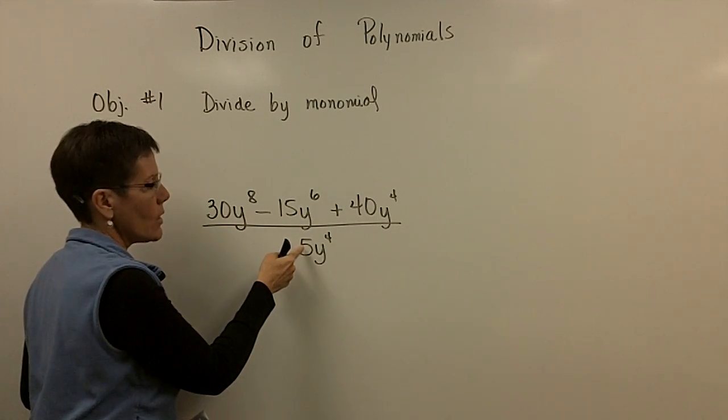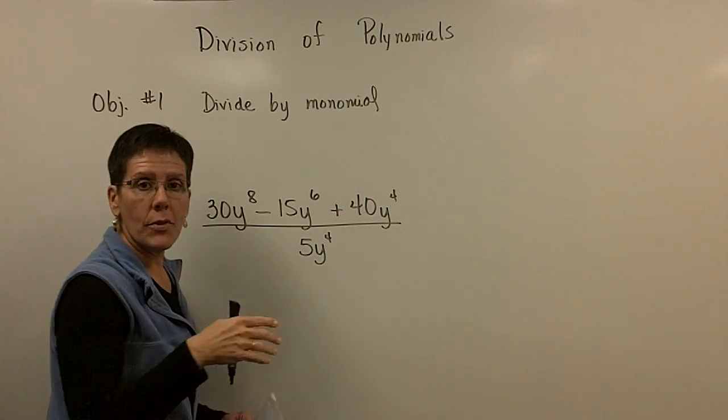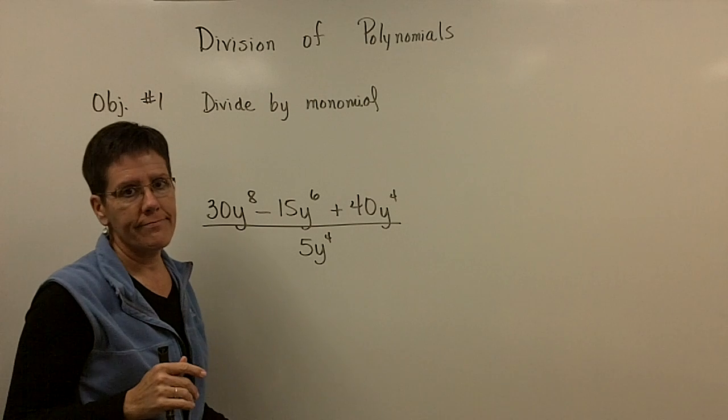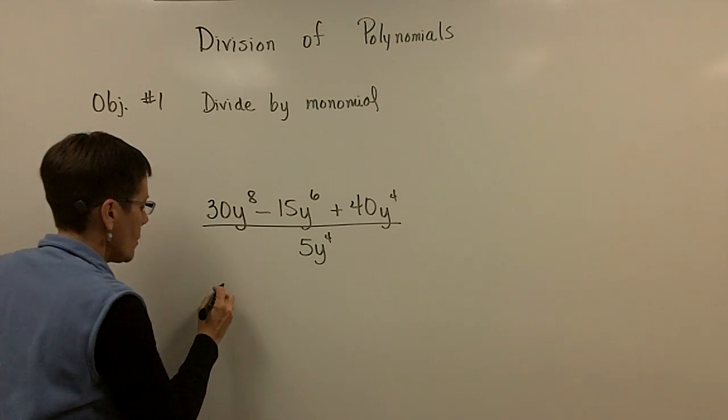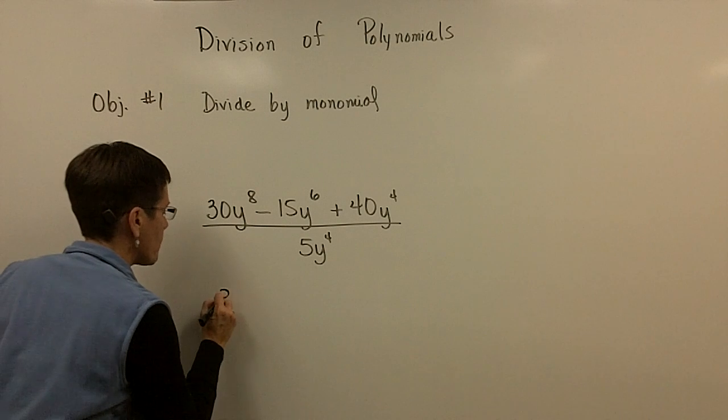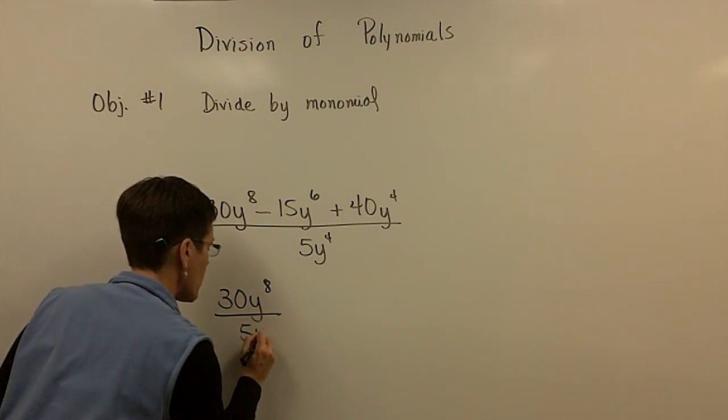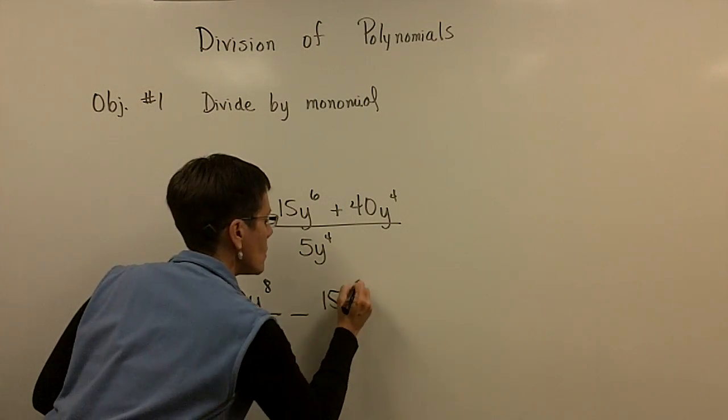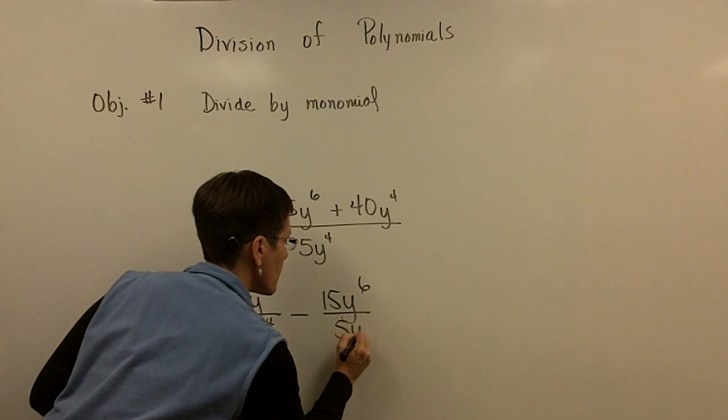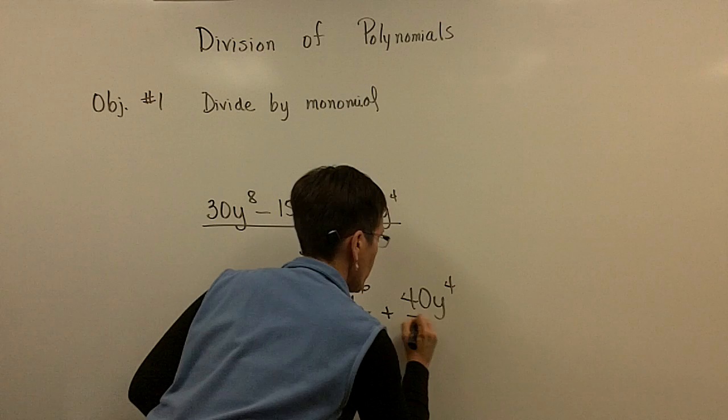You can't just say, oh look, five goes into forty eight times, and y to the fourth over y to the fourth is gone because it equals one. You can't do that. This 5y^4 belongs to the 30y^8, and it belongs to the -15y^6, and it belongs also to the 40y^4.